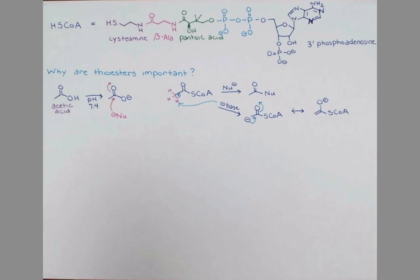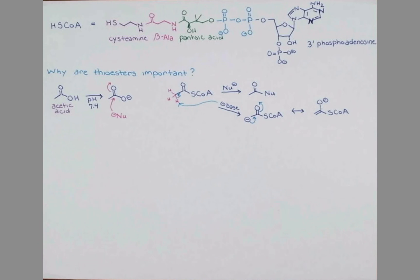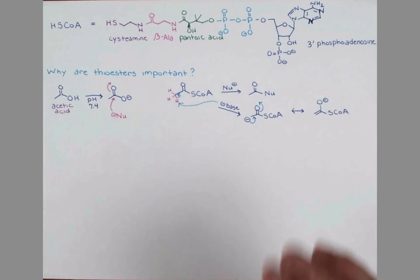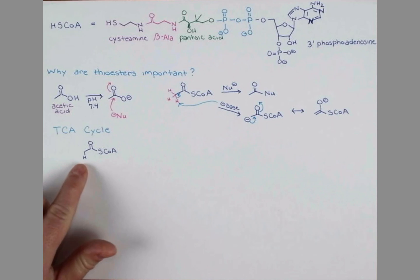Now, let's look at two examples of coenzyme A esters in biochemistry so we can see these processes illustrated: enolization and nucleophilic attack. In the TCA cycle, acetyl coenzyme A, which I'm showing with one of these acidic protons drawn out, is going to bind to an enzyme.